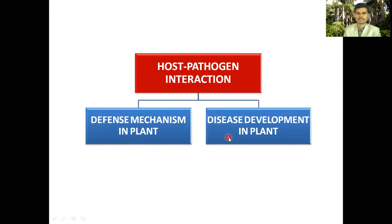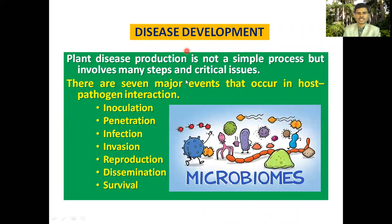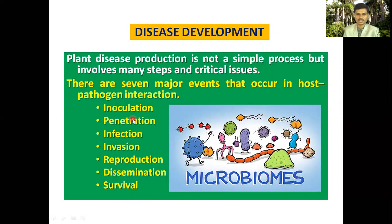In this video tutorial we will discuss host-pathogen interaction with respect to disease development in plants. As we all know, disease development in plants is not a simple process but involves many steps and critical issues. There are seven major events that occur in host-pathogen interaction: inoculation, penetration, infection, invasion, reproduction, dissemination, and survival of the pathogen.